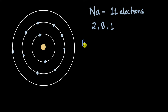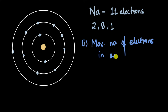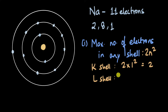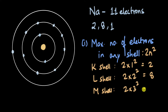It turns out there is. The first rule is that the maximum number of electrons in any shell is given by the relation 2n², where n is the orbit number. For the first shell (K shell, n=1), the maximum is 2×1²=2. For the second shell (L, n=2), the maximum is 8. For the third shell (M, n=3), the maximum is 2×9=18, and so on.